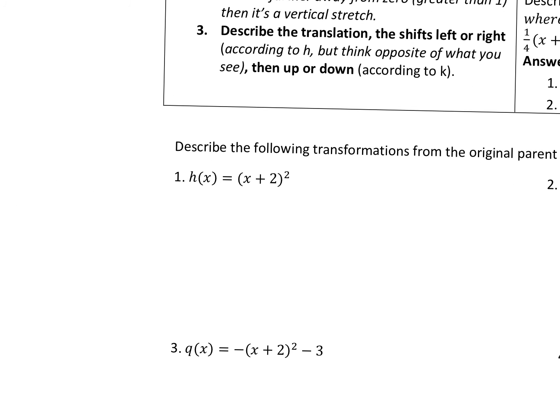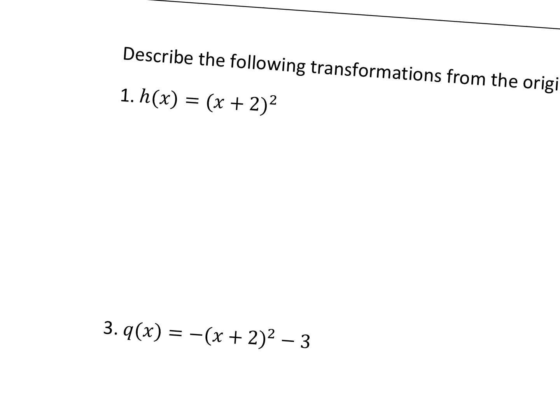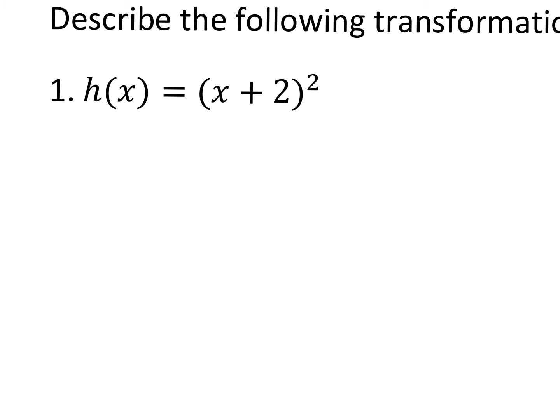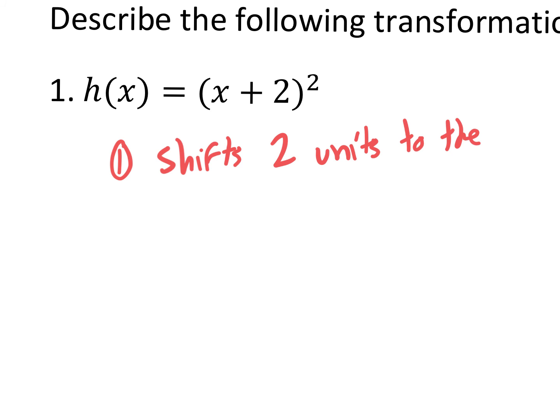Looking at the first practice problem: the only thing we describe for this one is it shifts two units to the left. It didn't have a reflection, it didn't have a vertical stretch or compression, and it doesn't even shift up or down because there is no k value. So all we write is: shifts two units to the left.